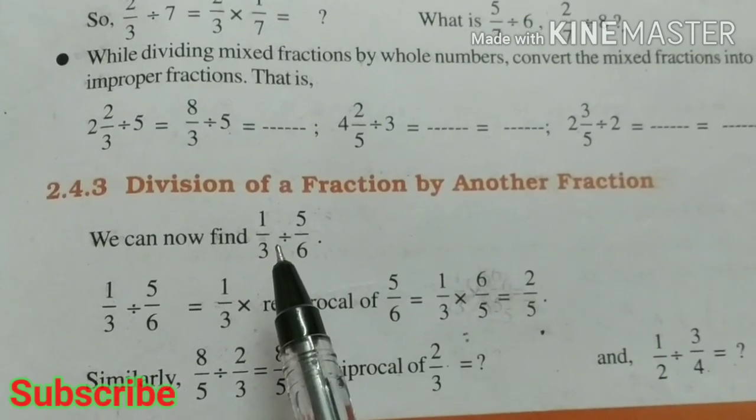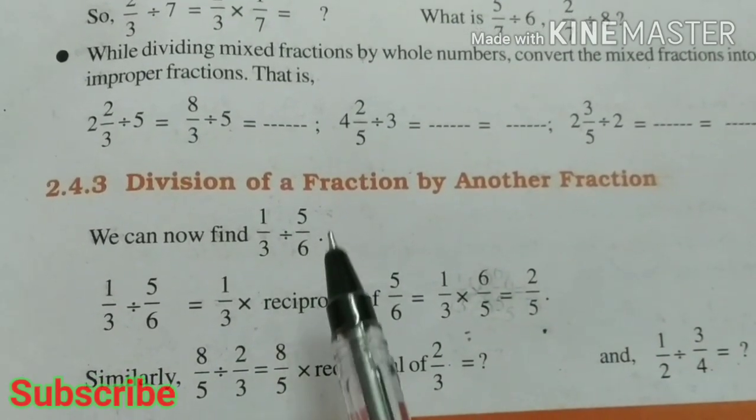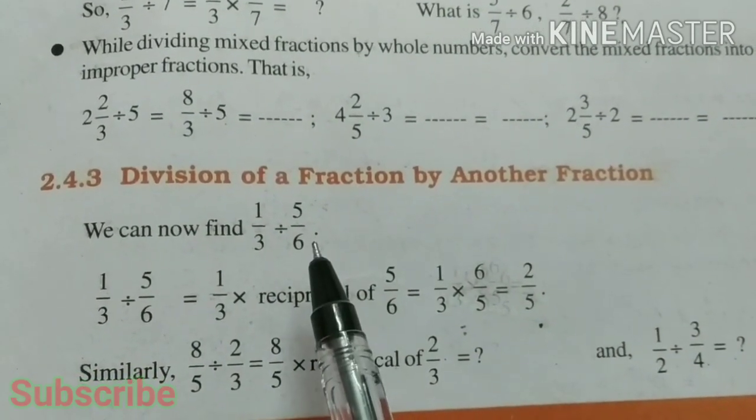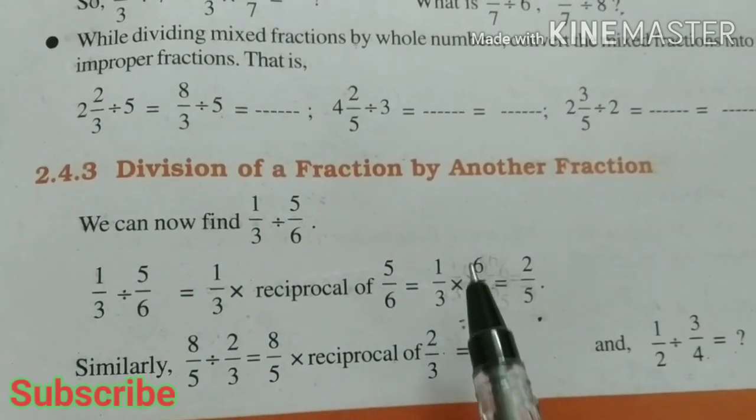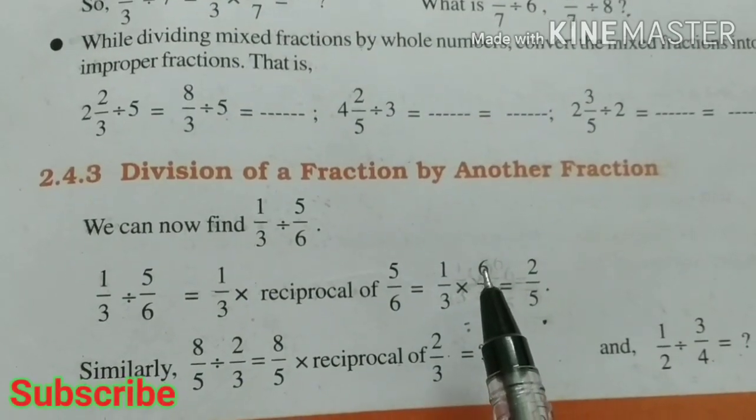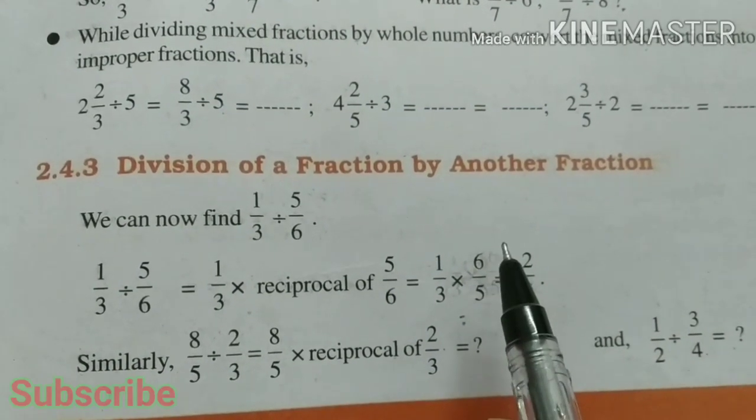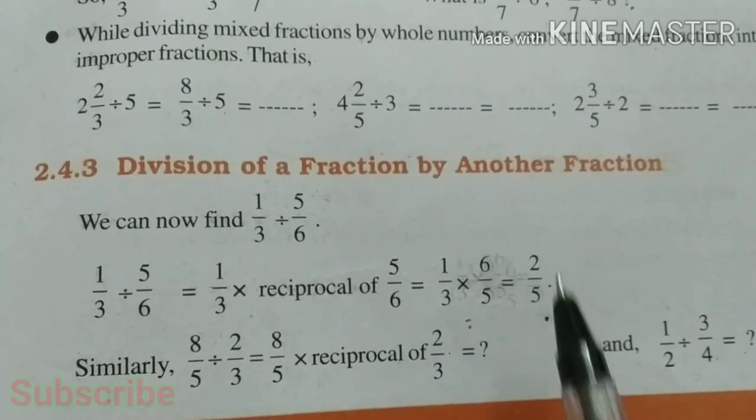So that will be 6/5. 1/3 × 6/5. 6 divided by 3 is 2. So we get 2/5.